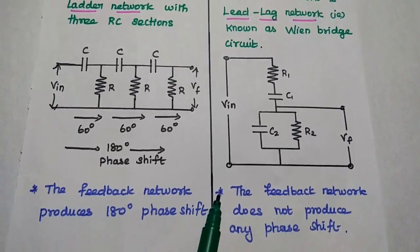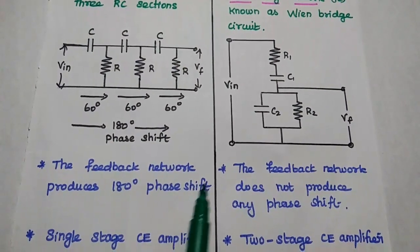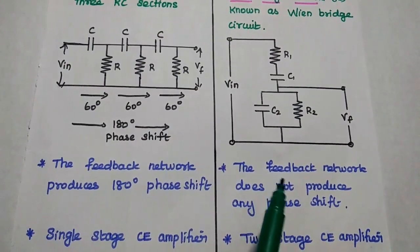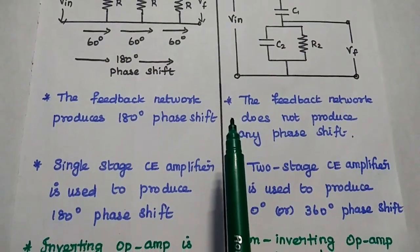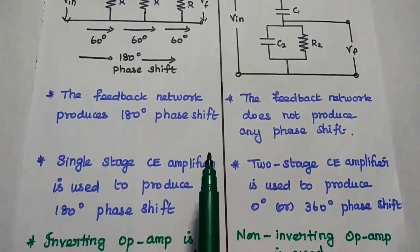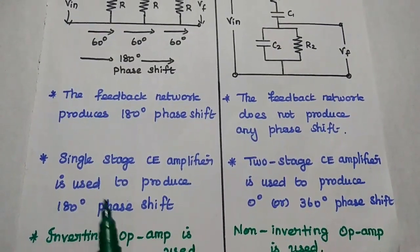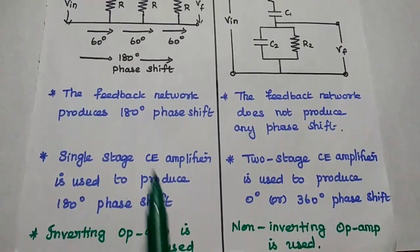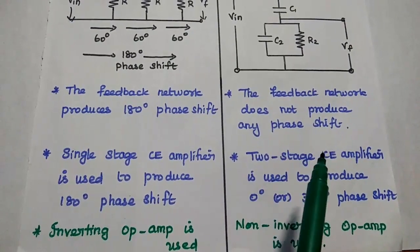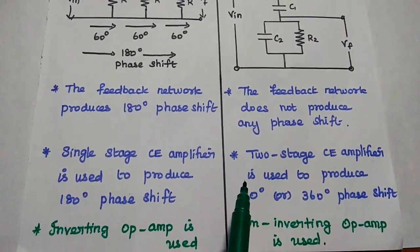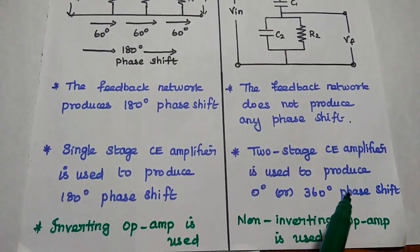In the RC phase shift oscillator, the feedback network produces 180 degree phase shift. But in the Wien bridge, the feedback network does not produce any phase shift. Since we need 0 degree or 360 degree for oscillation, a single stage CE amplifier is used in the RC phase shift oscillator to produce 180 degree phase shift, giving a total of 360 degrees. For the Wien bridge, a two-stage CE amplifier is used to produce 0 degree or 360 degree phase shift.